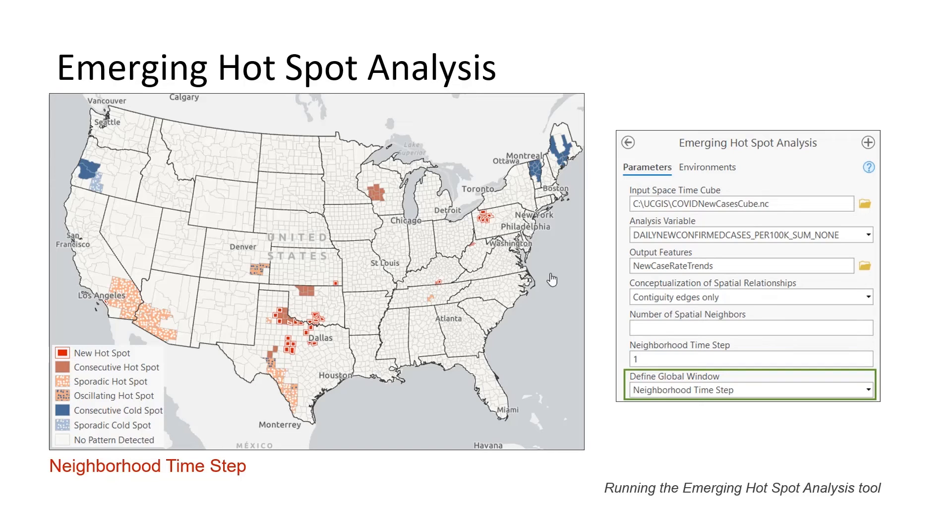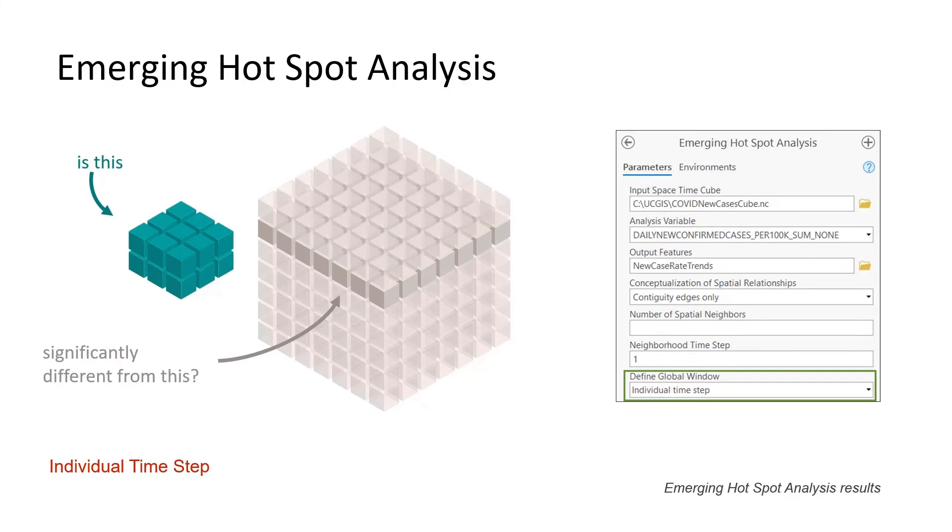Let's look at one more global window option. The individual time step is like taking a snapshot of the data at each time period. Each bin is only compared to all other neighboring bins in the exact same four-week time window. If we want to take action to reduce the number of new COVID cases, this is probably the most appropriate global window for our analysis because it factors out the broad overall trends and focuses on patterns in the most recent time period.